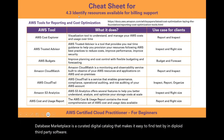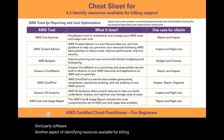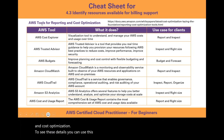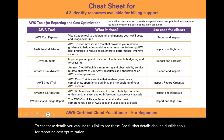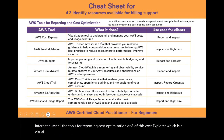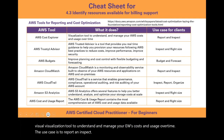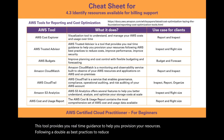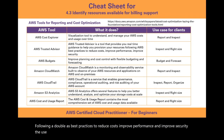AWS tools for reporting and cost optimization include: AWS Cost Explorer, a visualization tool to understand and manage your AWS costs and usage over time (use case: report and inspect). AWS Trusted Advisor provides real-time guidance to help you provision resources following AWS best practices to reduce costs, improve performance, and improve security (use case: inspect and right-size).